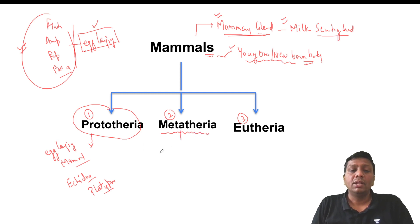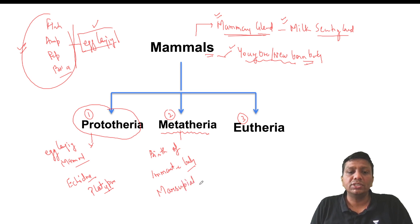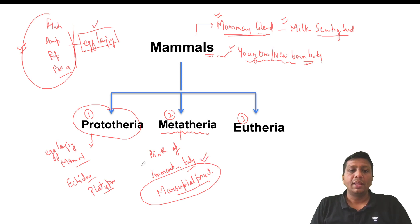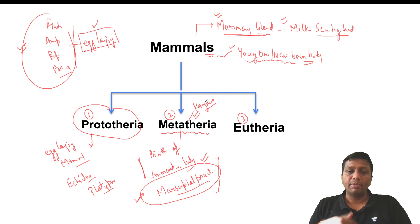Metatherians give birth to partially developed or immature babies. They have a marsupial pouch where the immature young grows and matures. Examples are kangaroos and opossums. In kangaroos, the immature baby is born and then matures inside the pouch on the stomach. In opossums, the pouch is on the backside.